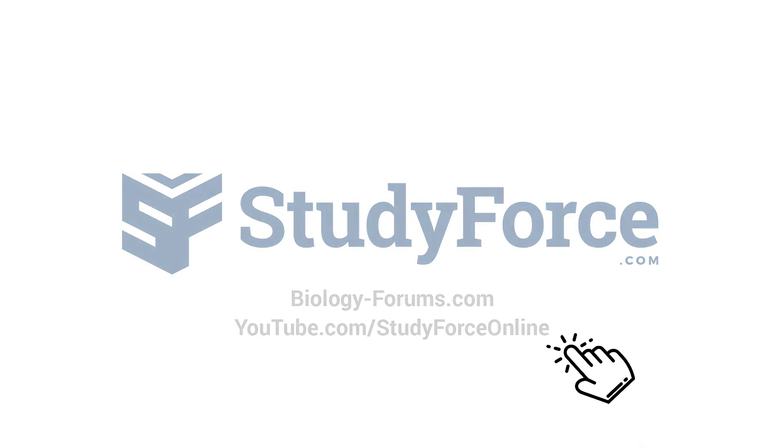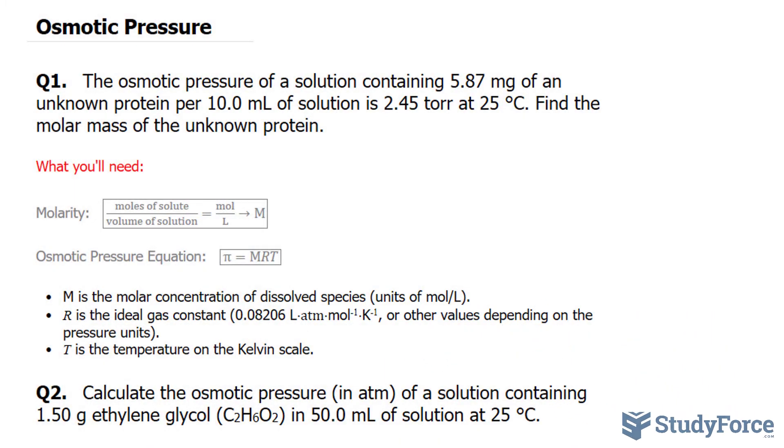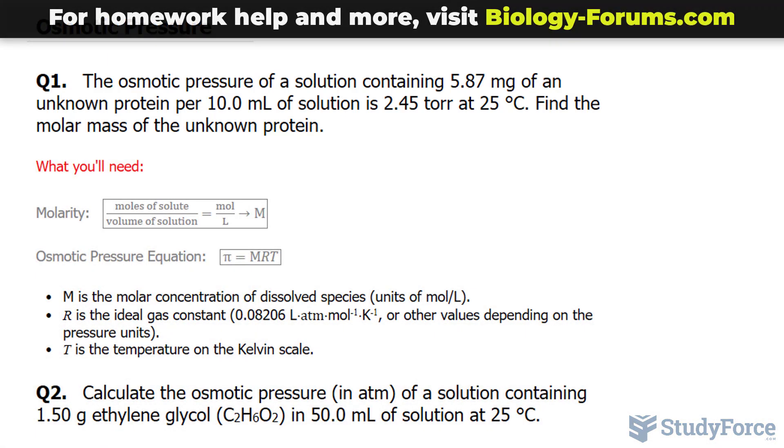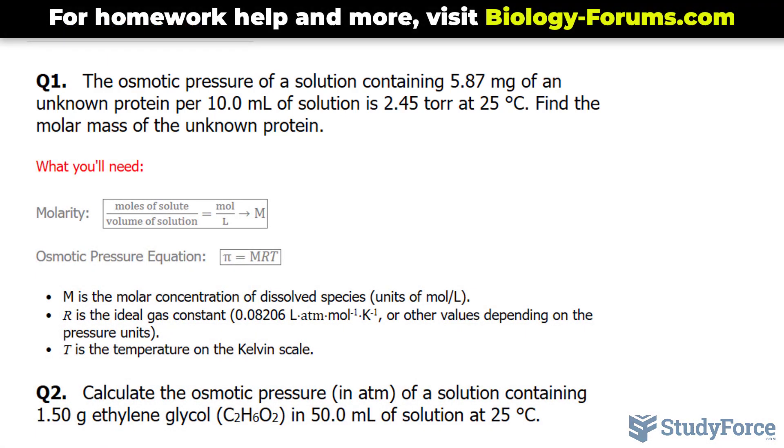In this lesson, I'll show you how to calculate osmotic pressure using the osmotic pressure formula. The first question reads: the osmotic pressure of a solution containing 5.87 milligrams of an unknown protein per 10.0 milliliters of solution is 2.45 torr at 25 degrees Celsius. Find the molar mass of the unknown protein.